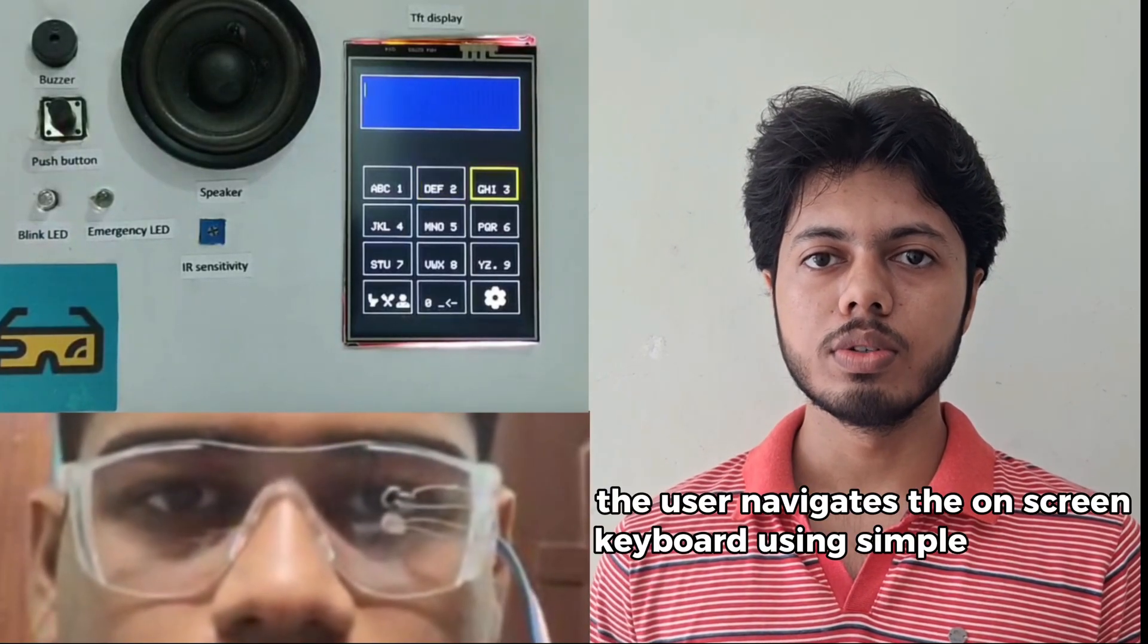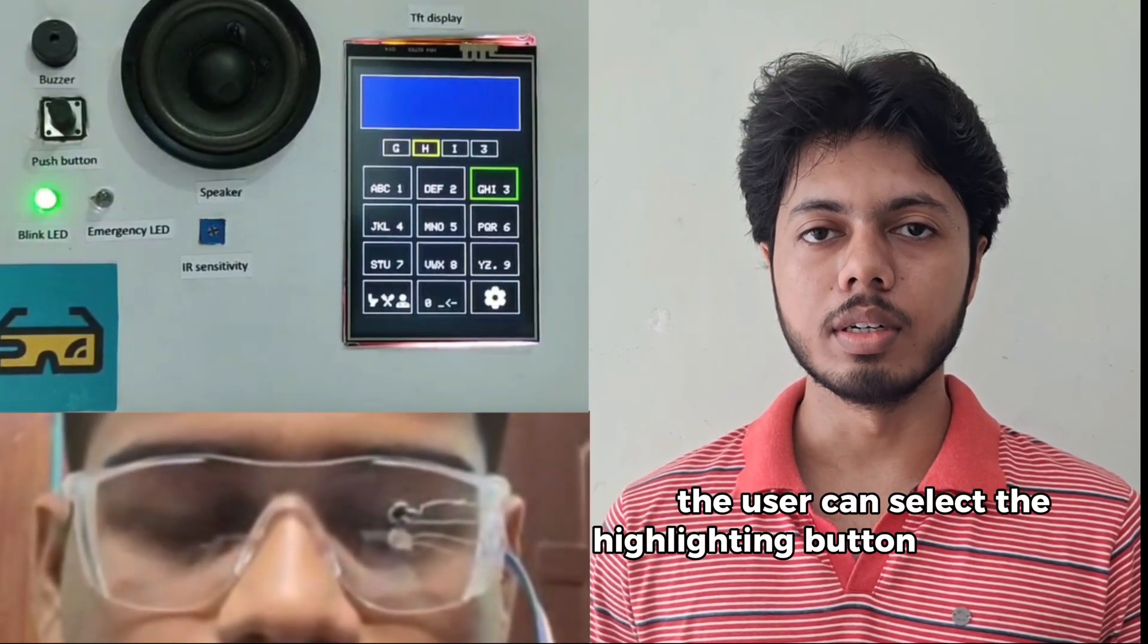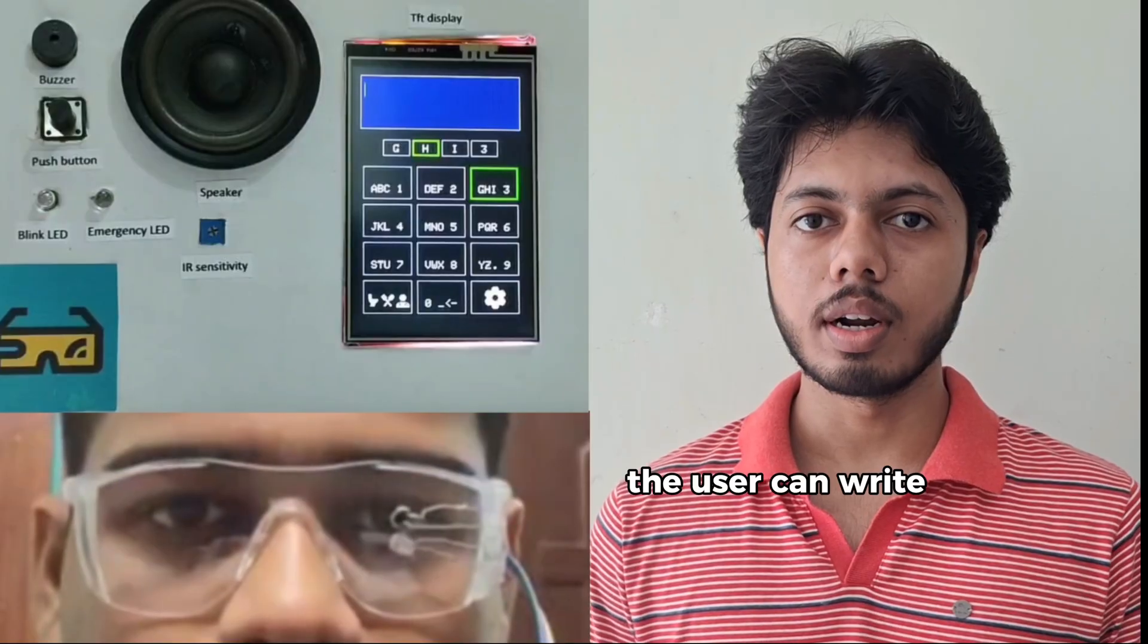The user navigates the on-screen keyboard using simple eye blinks. With one eye blink, the user can move forward. With two eye blinks, the user can select the highlighted button. And with this, the user can write the whole message.